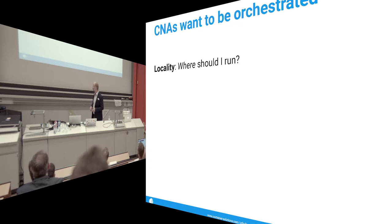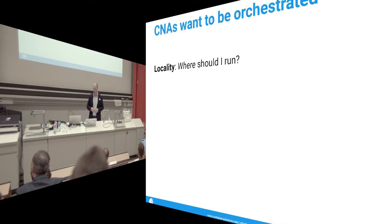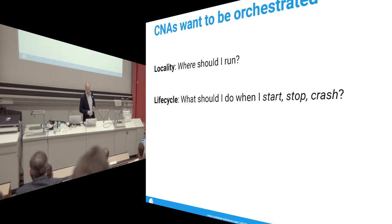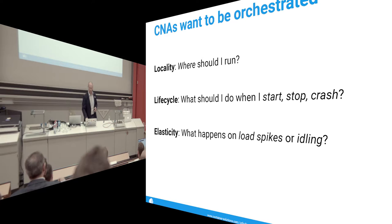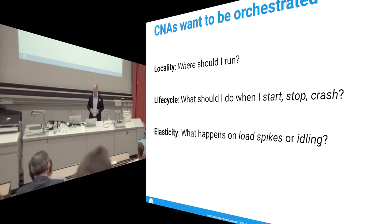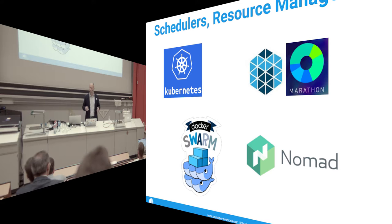Cloud-native applications need to be orchestrated in some way. There are three aspects: first, locality — where should individual components run, affinity rules, security or reliability constraints, specific cloud providers or hardware nodes with fast storage. Second, lifecycle management — what should the system do when it starts up, stops, or fails. Third, elasticity — what happens during traffic spikes or when a component is idling. The typical answer is a scheduler and resource manager like Kubernetes, Mesos, or Docker Swarm.